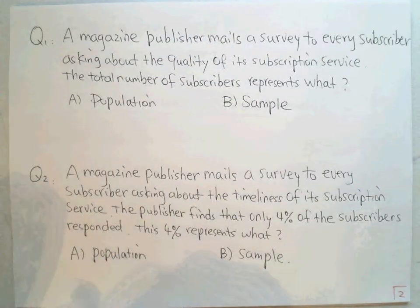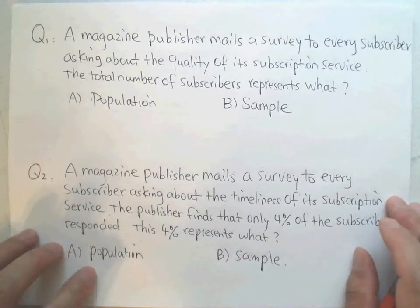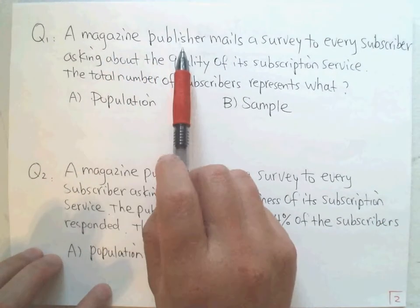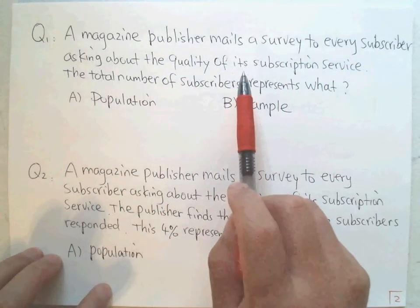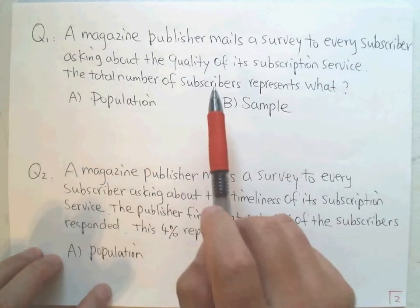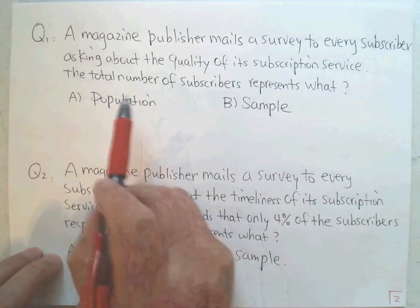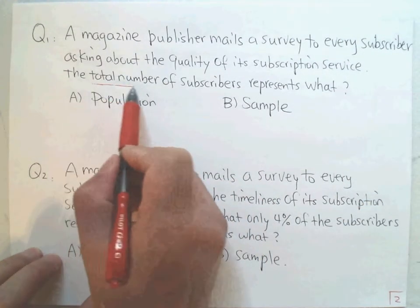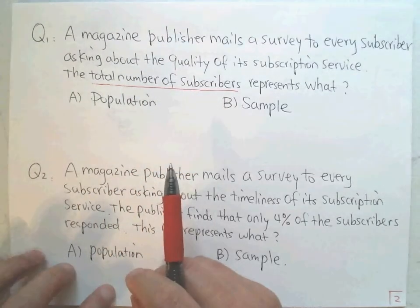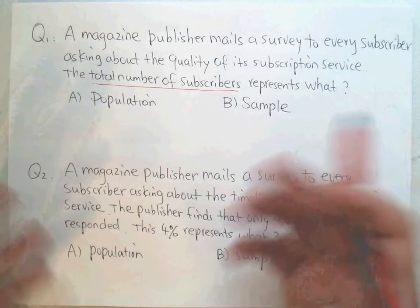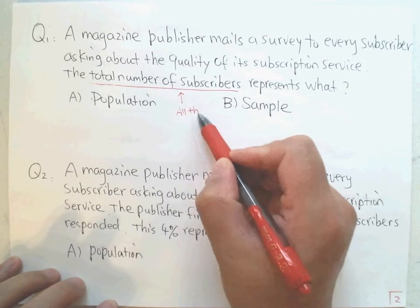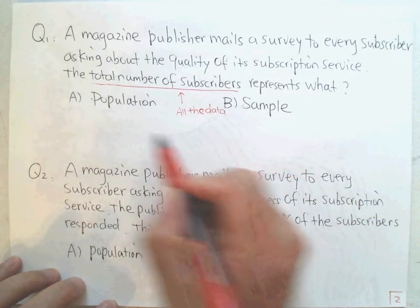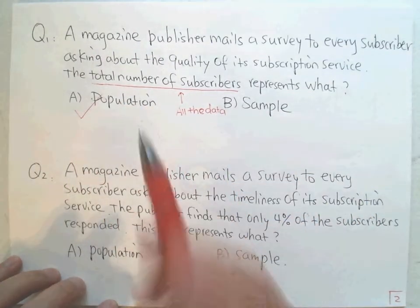Let me look at two examples. Here is the first example: a magazine publisher mails a survey to every subscriber asking about the quality of their subscription service. The total number of subscribers represents all the data, right? All the data means population. All the data means the population.